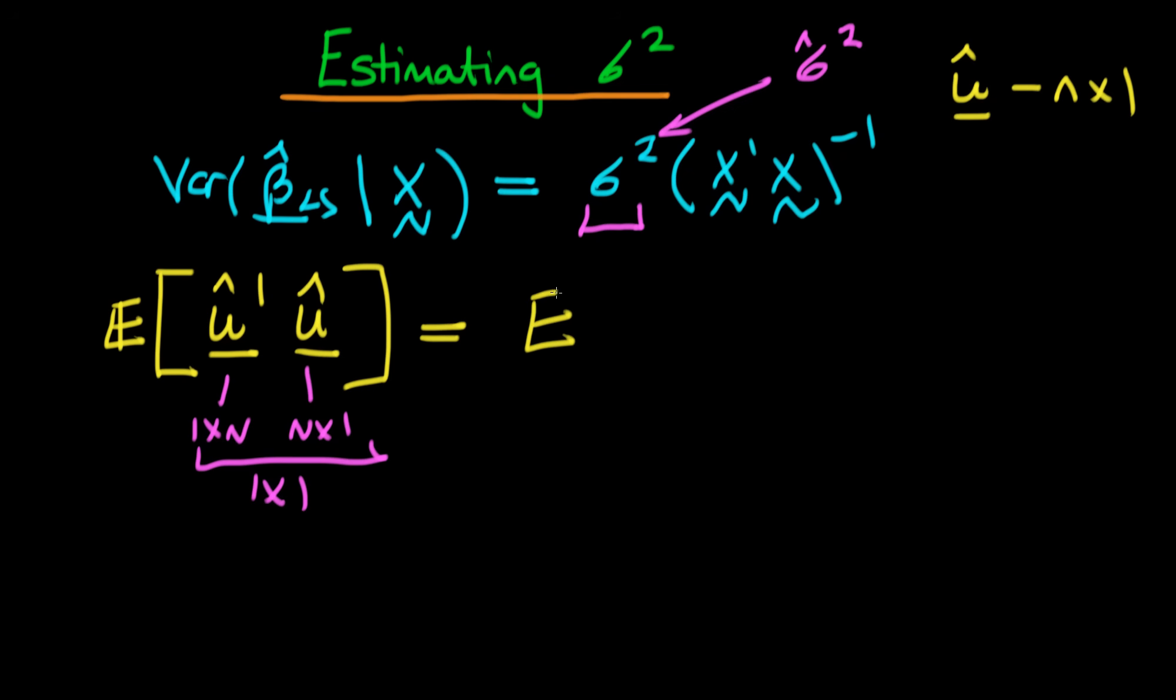Well, what we're doing is we're taking the expected value of, first of all, the residual vector transposed. So that's just going to be u hat 1, and then the next component is going to be u hat 2 all the way through to u hat n. And then we're multiplying that by the original residual vector, which is u hat 1 all the way through to u hat n.